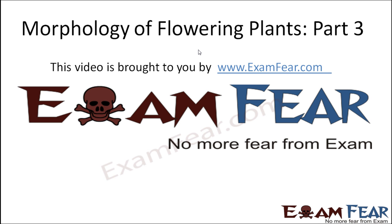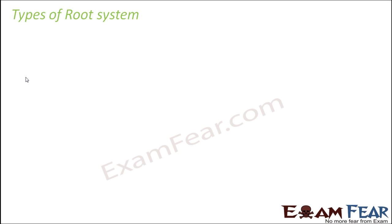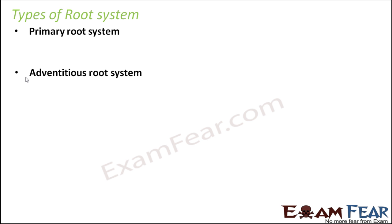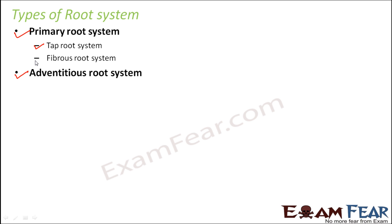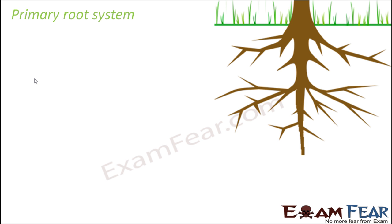This video on morphology of flowering plants part 3 is brought to you by examfew.com. Now let us talk about the types of root system. We will broadly classify roots into two types: primary root system and adventitious root system. The primary root system is further classified into tap root system and fibrous root system. We will first talk about tap root, then fibrous root, and finally adventitious roots.